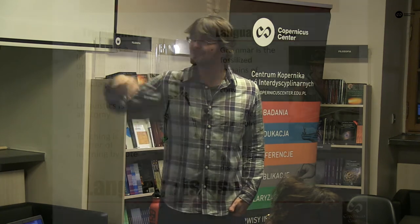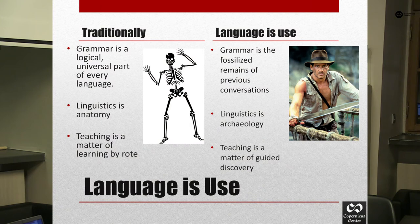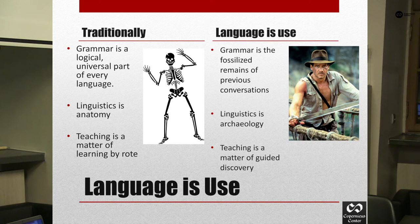The traditional view, generally held by most people teaching today, is that grammar is a logical, universal part of every language. So linguistics becomes something like anatomy — you're trying to uncover the bones of a language and work out how things fit together. Teaching becomes a matter of identifying these different bones and how they work. But 'language is use' sees grammar differently: grammar is really just the fossilized remains of things that people have said in the past and kept on saying. So linguistics is much more like archaeology — removing different layers of history to get back to what people were originally trying to say. Teaching becomes more a matter of guided discovery.